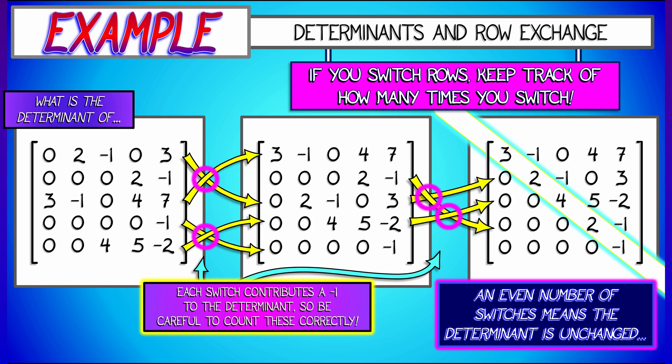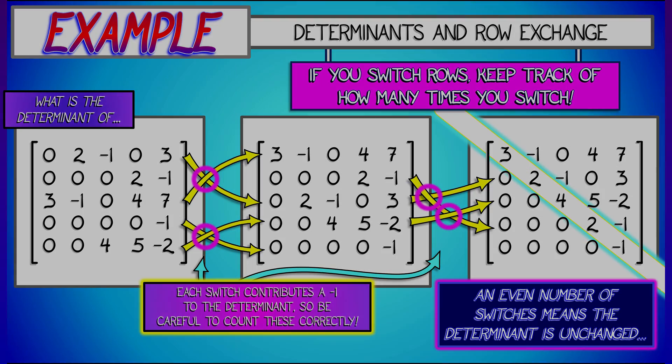Four negatives gives positive 1, which means the determinant is unchanged in sign. I can read off the determinant from the product of these diagonal entries, and I wind up getting negative 48.